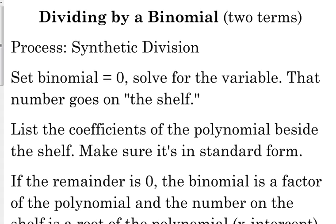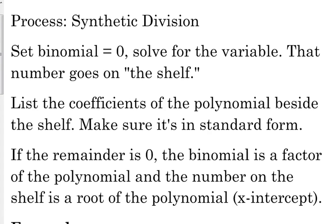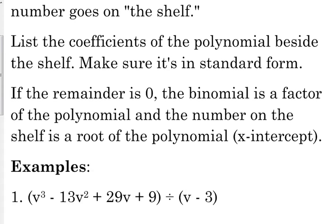So you set that binomial equal to zero and you solve for the variable. That should be very simple, like one, maybe two step process. That number goes on what we call the shelf. Then we're going to list the coefficients of the polynomial beside the shelf. We've got to make sure it's in standard form and we've got to make sure that nothing is missing. When we get finished with the process, it's hard to describe it in words, so I'm just going to have to show you. But when we finish with the process, we're potentially going to get a remainder. If that remainder is zero, then that binomial is a factor of the polynomial and the number on the shelf is a root of the polynomial, or it would be an x-intercept.